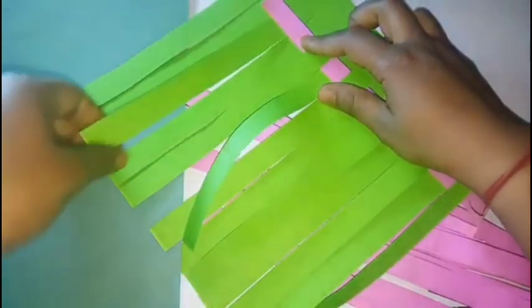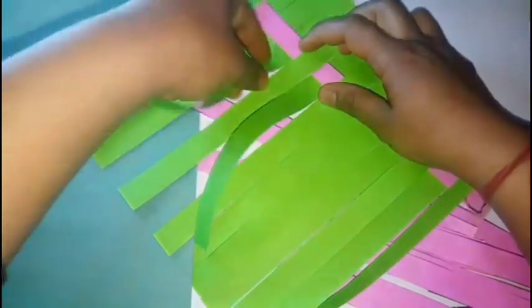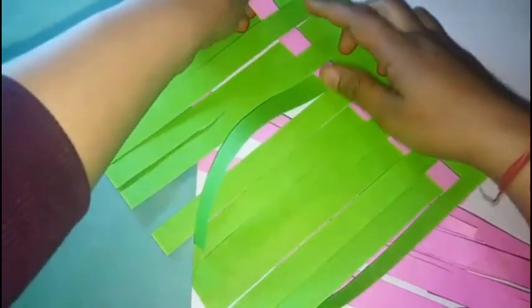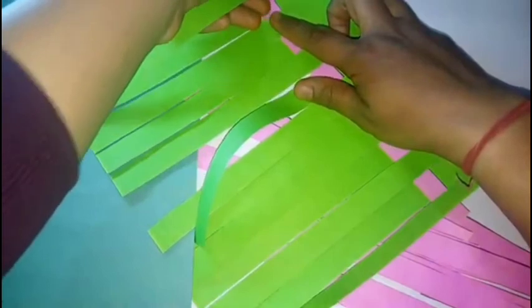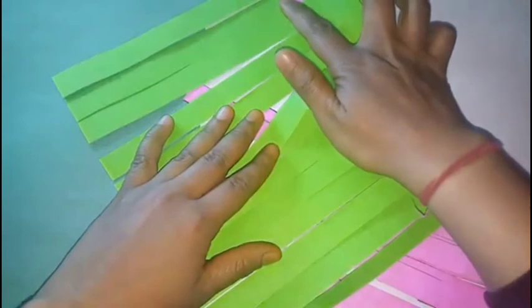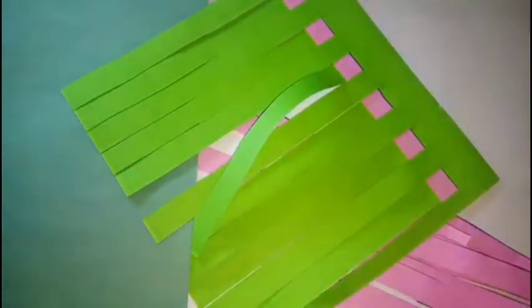So, students, we have done with one strip and we will repeat it with all the strips. When we will weave the second strip, then you will change the order. If your strip is earlier upside, then you will place it downside, up-down continuously.